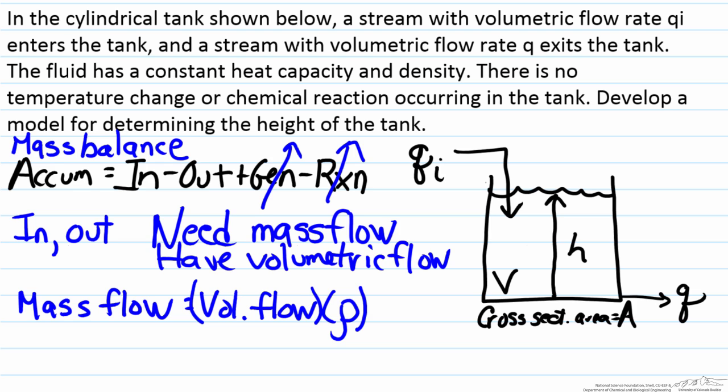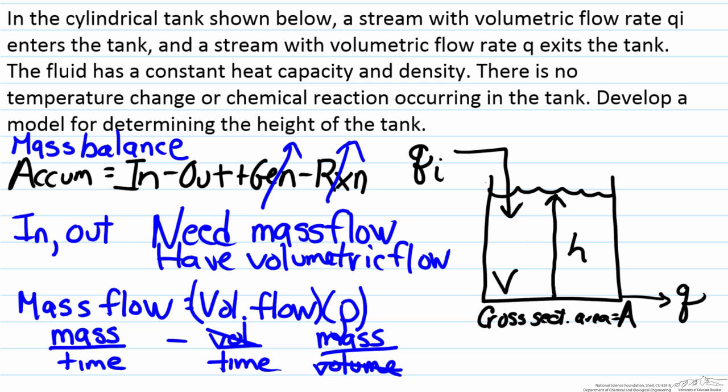Do a quick units look on this. Notice we see the fact that the mass flow rate is mass per time, the volumetric flow rate is volume per time, and rho is mass per volume. So therefore the volumes cancel out, and we have mass per time on both sides of the equation, which is what we want.